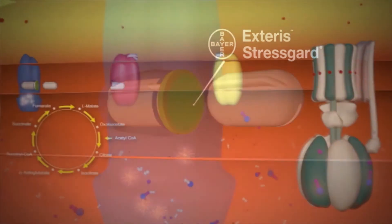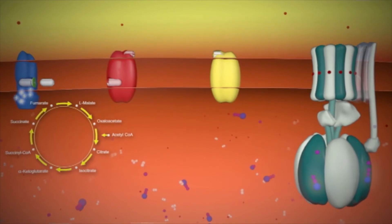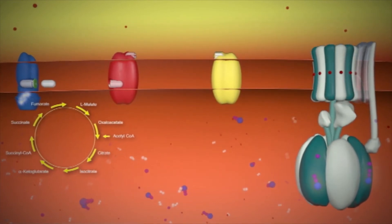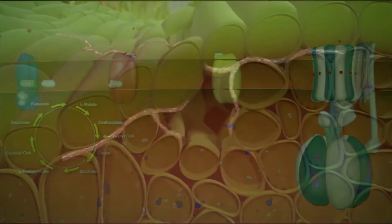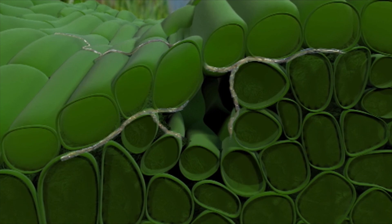And since no other route is possible, the energy production chain is also blocked. The cell runs out of ATP energy. The blocking of complex II stops the citric acid cycle. The fungus dies.